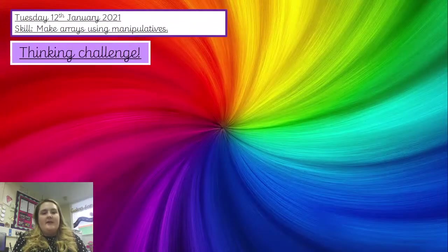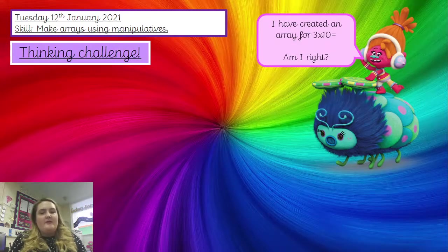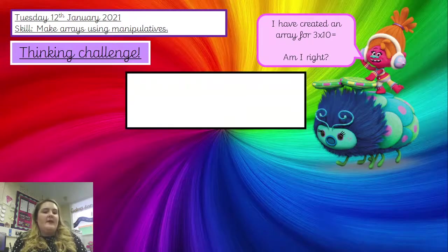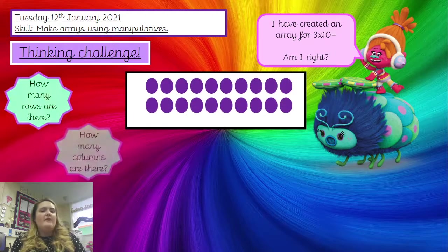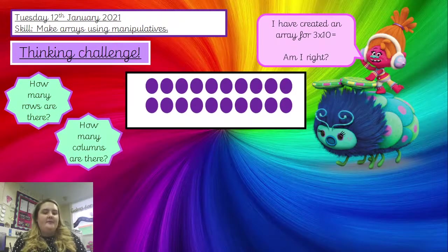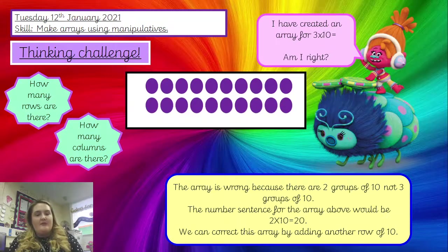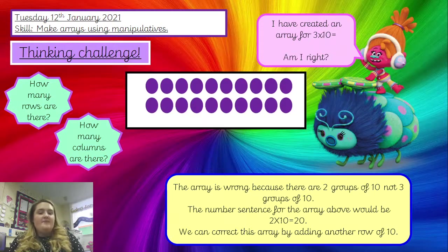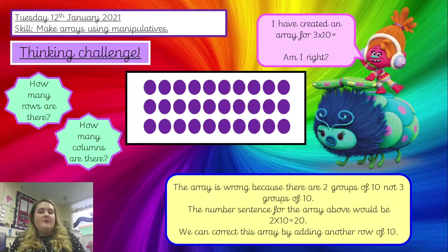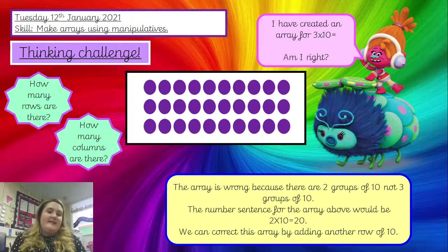Let's have a look. One of the other trolls has tried to create an array for three times ten. Have a look at your array and compare it to hers — is she right? And if she isn't, what has she done wrong? How many rows and columns are there in her array? Her array is wrong, because there are two groups of ten and not three groups of ten. So when we have three times ten, we need three groups. Her number sentence for this array would be two times ten equals twenty. Let's correct hers — we've got three lots of ten now. Have you got the same array that's on the screen? Give yourself a big tick if you have.